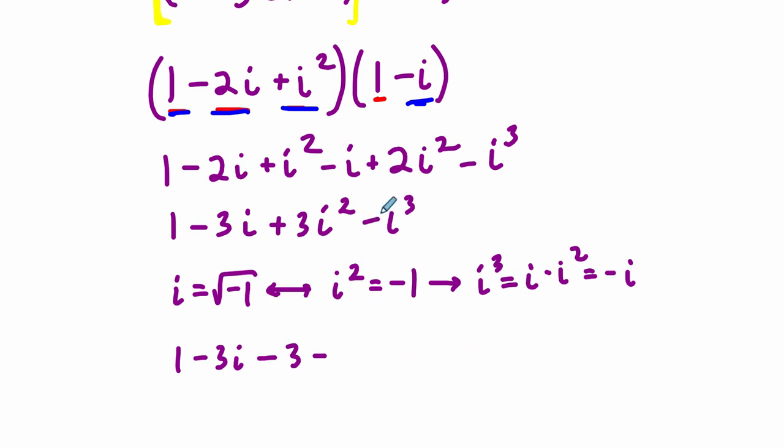So that means I have subtracting i cubed, I'm subtracting negative i. So I'll write that down. And then I can simplify this. 1 minus 3 is negative 2. And negative 3i minus negative i is really negative 3i plus i. And that's going to equal negative 2 minus 2i, because negative 3 groups plus 1 group is negative 2 groups of i.